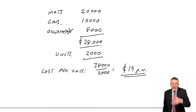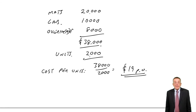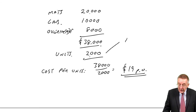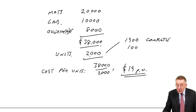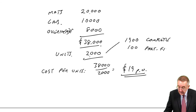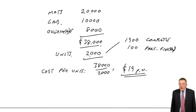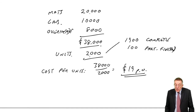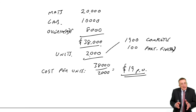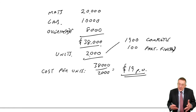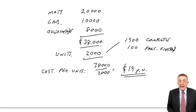Another problem area is work in progress. Here we were working on 2,000 units, but suppose 1,900 of them were completely finished while the other 100 were only part finished. If they're only part finished, it would be unfair to value them at the full cost of $19 — we'd only value them at part cost. But it does mean extra work, as you'll see in the later chapter.